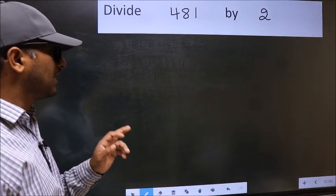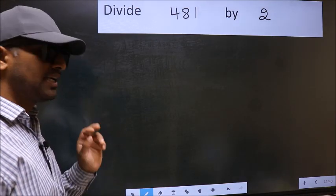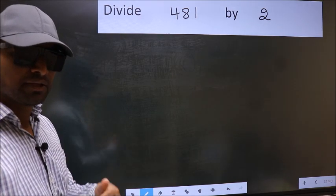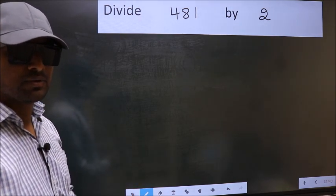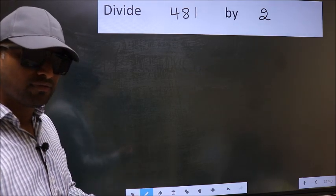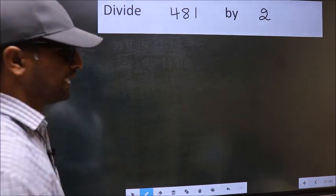Divide 481 by 2. While doing this division, many do this mistake. What is the mistake that they do? I will let you know. But before that, we should frame it in this way.